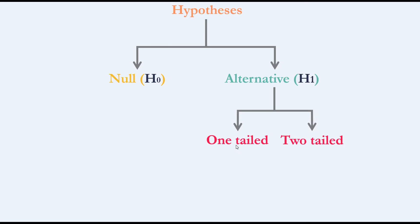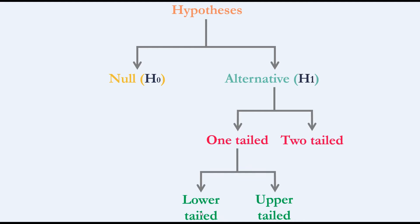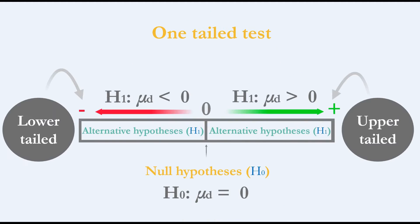The alternative hypothesis assumes that the mean difference is either less than or more than zero. The alternative hypothesis is a little more complicated: we have one-tailed and two-tailed tests, and within one-tailed we have lower-tailed and upper-tailed. In the upper-tailed test, it assumes the mean difference is more than zero, so it measures the effect only if the mean difference is greater than zero.